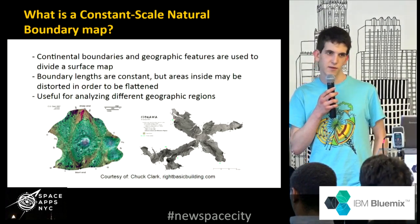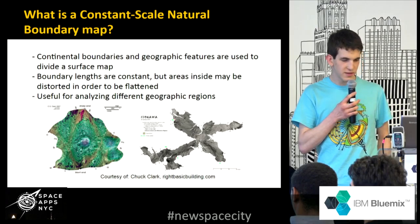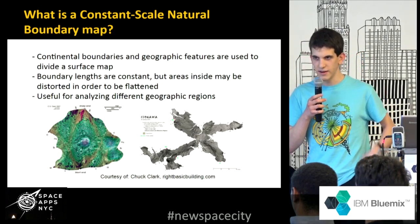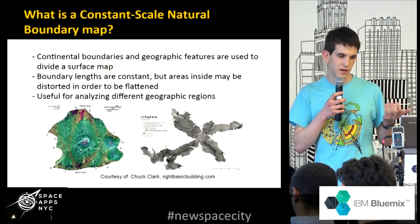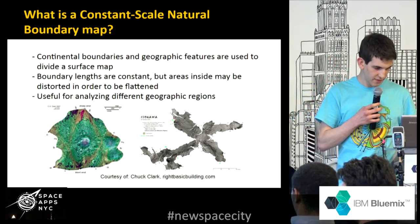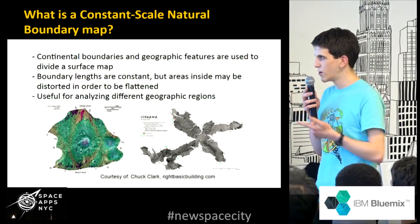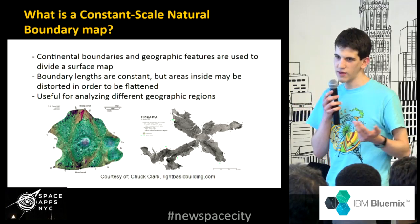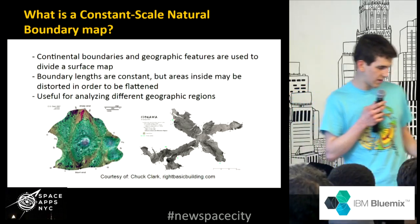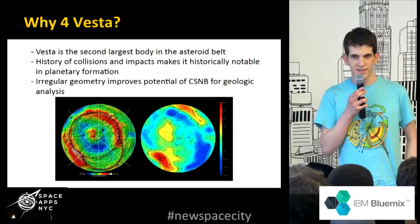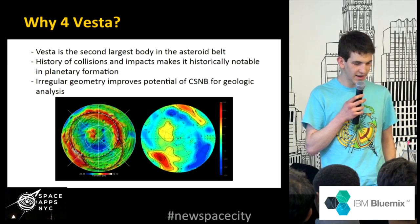And it's publicly available. So what is a constant-scale natural boundary map? It basically takes continental boundaries, geographic features, or other data from, say, elevation or thermal data, and uses that to divide a surface map into different areas and then splay it out. Imagine taking an orange and unpeeling it according to a pattern of scratches on it. You can see techniques that allow you to get a rather round and convex map on the left, or a more extreme map on the right. Both have their advantages, and you can center them at the poles, at the equator, or anywhere.